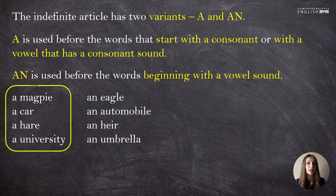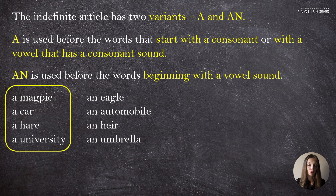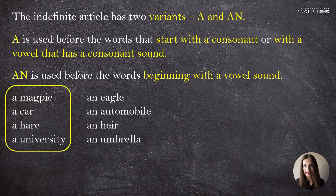In the first column, the sounds m, k, h are consonant. The last word, 'university,' though it has the vowel letter U, the sound is consonant — it's Y. It's not A like in the word 'utterance,' where the same letter U produces a vowel sound. In 'university' it is a consonant sound Y. So we say 'a university' — not 'an university.'